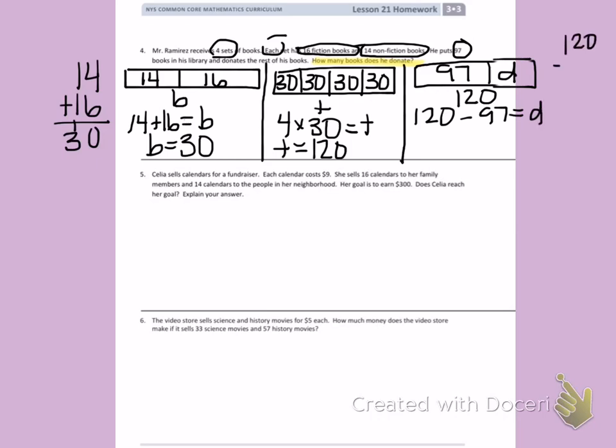I am rewriting on the side. 7 minus 0 I can't do. So I am going to borrow from the 2 and turn it into a 1. Give to that 0 in the 1's place and turn it into a 10. 10 minus 7 is 3. Now I have 11 minus 9. 9, 10, 11. That's 2. So the donated books equals 23. Mr. Ramirez donated 23 books.